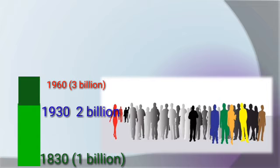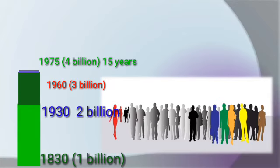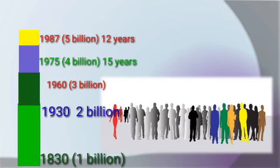Then from 1930 to 1960–1975, only 15 years were needed for another billion increase in population. Moving further on, in 1975, the population reached 5 billion, and the next billion took only 12 years.